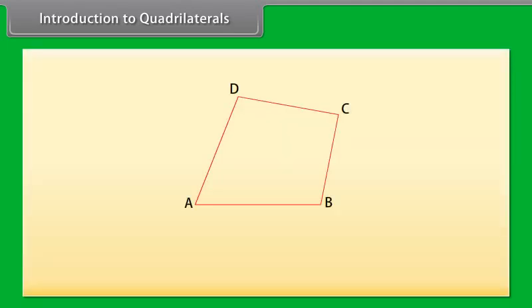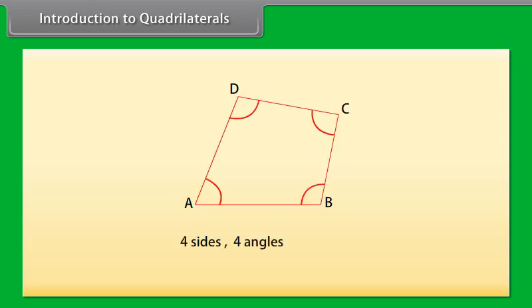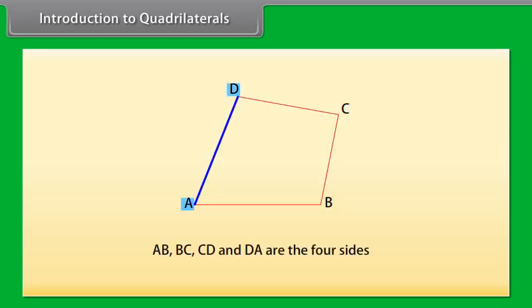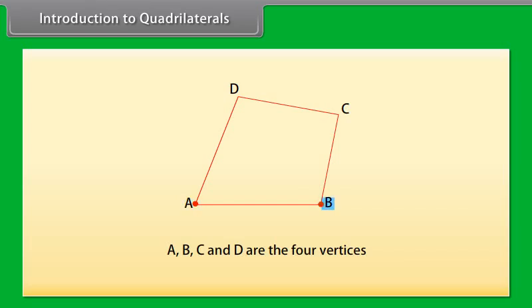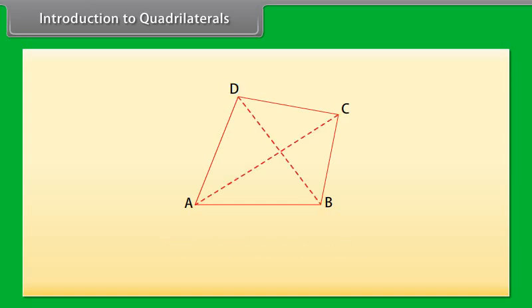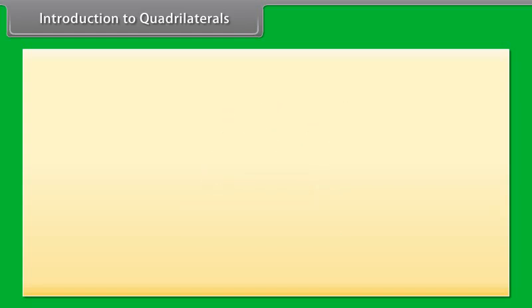Introduction to quadrilaterals: Look at figure ABCD. This is a quadrilateral. A quadrilateral has four sides, four angles, and four vertices. Here AB, BC, CD, and DA are the four sides. Angle A, angle B, angle C, and angle D are the four angles, and A, B, C, and D are the four vertices. If we join the opposite vertices A to C and B to D, we get the diagonals AC and BD.